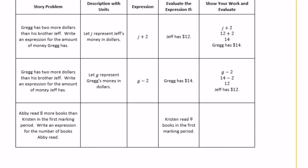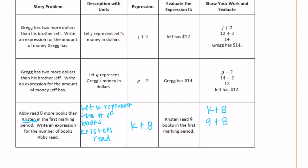Abby read eight more books than Kristen in the first marking period. Write an expression for the number of books Abby read. Let K represent the number of books Kristen read. Since Abby read eight more books than Kristen, the expression is K plus 8. If Kristen read nine books, then nine plus eight equals 17, so Abby read 17 books in the first marking period.